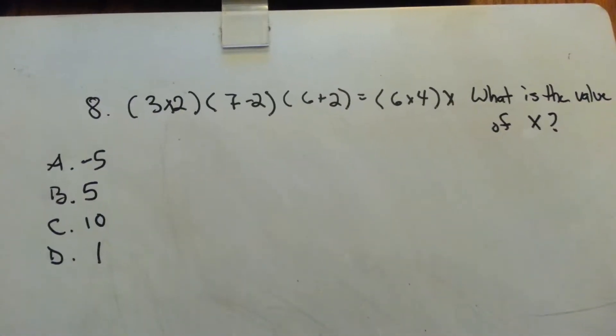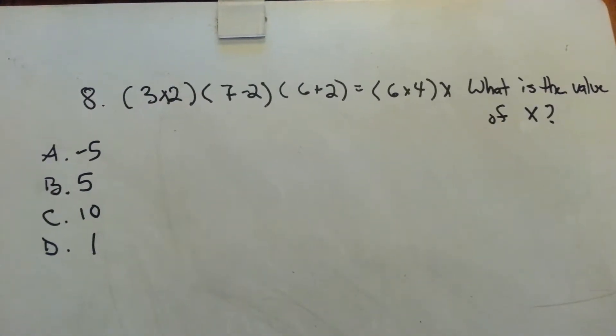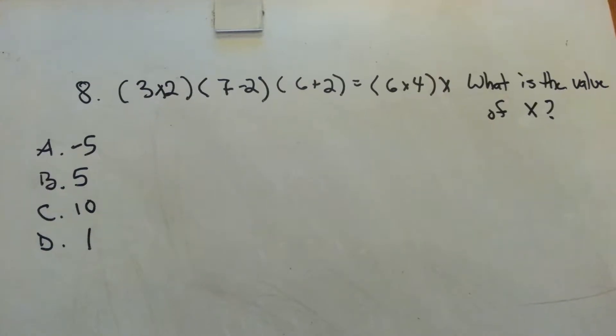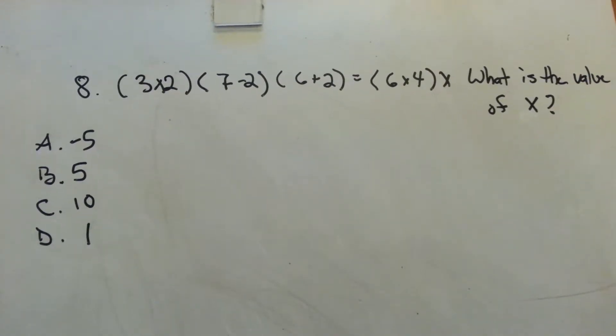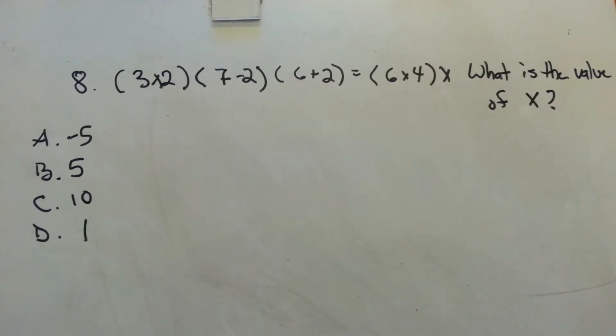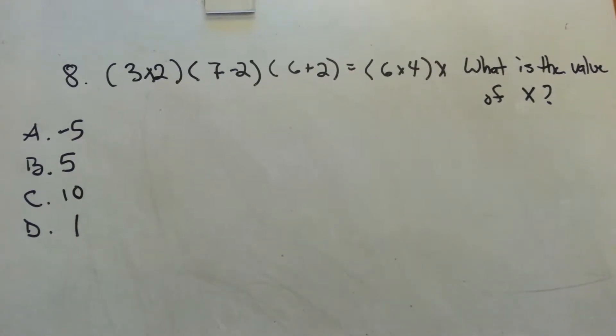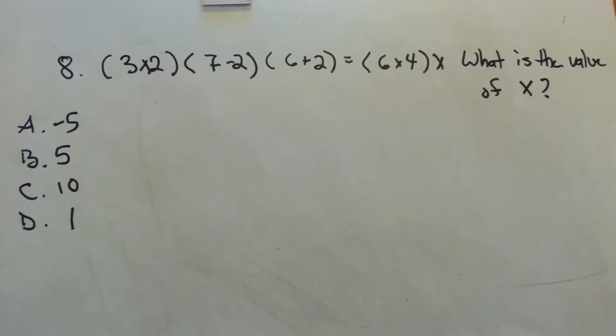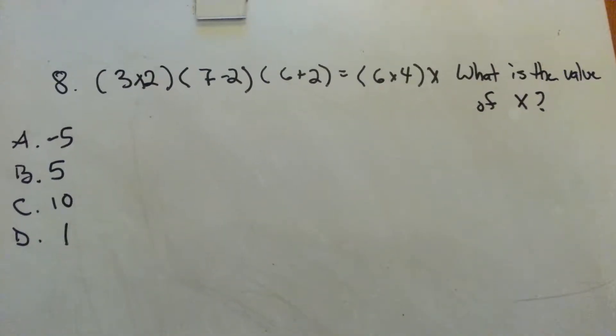So this next one we have (3x2)(7-2)(6+2) = (6x4)x. What is the value of x?